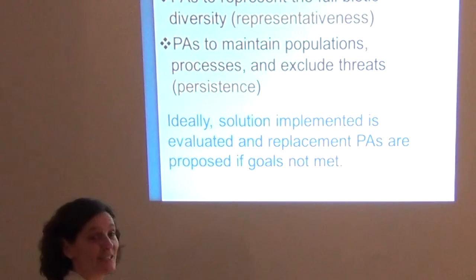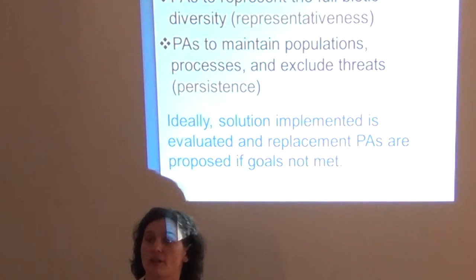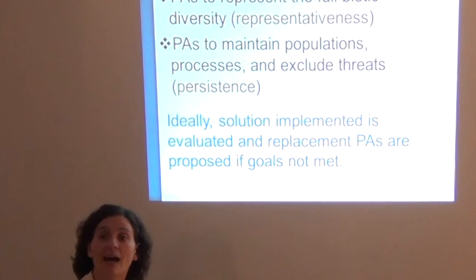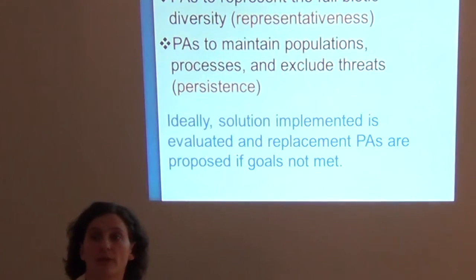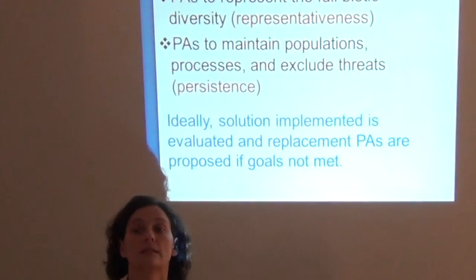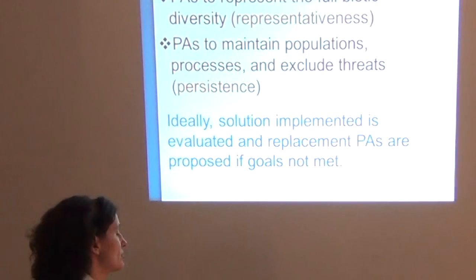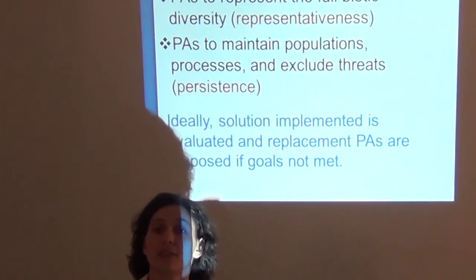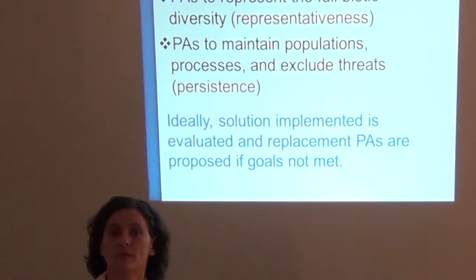Of course, it's easy to say we should be implementing a place prioritization plan, evaluating it, and then modifying and adjusting it so that it meets our conservation goals. But a lot of times it's hard to actually do this — to replace protected areas and revise them — because we have limited resources and we are acting in a real world with political and economic pressures. Ideally, we should be trying to evaluate and not have just a static view of the place prioritization process.